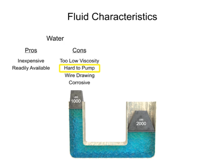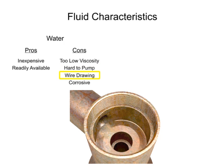Additionally, the speed at which it flows through the system causes an effect known as wire drawing. Wire drawing occurs when the water flow erodes or scores a pathway in the metal of machinery as it goes around corners and through orifices. It also has corrosive effects on metal machinery.